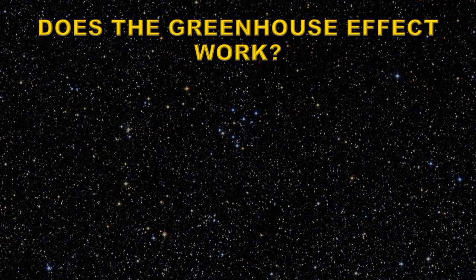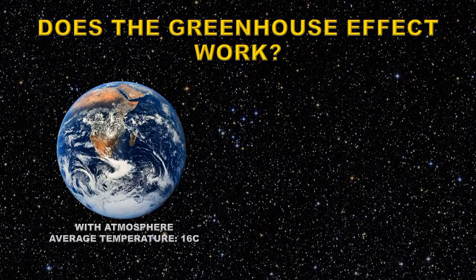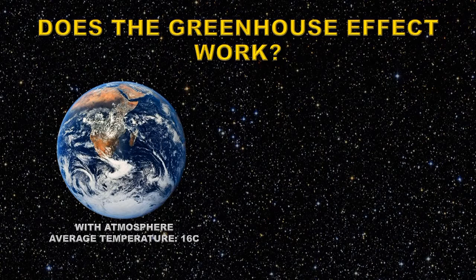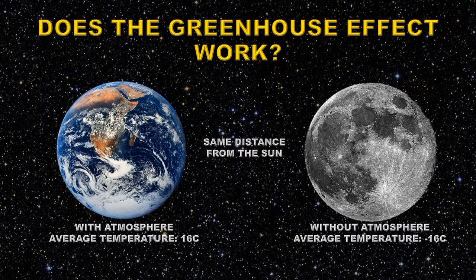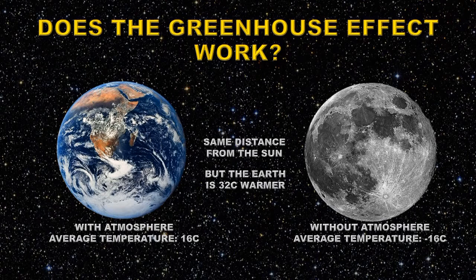We often hear that the greenhouse effect does not work. Well, let's see if it does — a simple experiment will prove that it does. Let's take the earth with an atmosphere that has an average temperature of about 16 degrees centigrade, and compare that with another body that's the same distance from the sun but doesn't have an atmosphere: the moon. The average temperature of the surface of the moon is minus 16 degrees centigrade. So that shows that the earth's atmosphere is helping our planet warm by 32 degrees centigrade. Without that effect, the earth would be an ice planet.